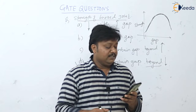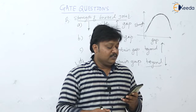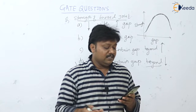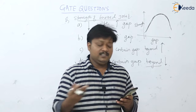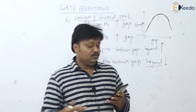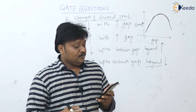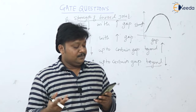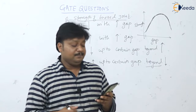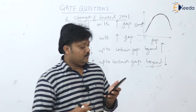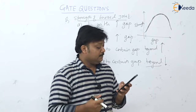Next question (repeated in 2011): which one of the following welding processes uses a non-consumable electrode? Again, TIG welding uses a non-consumable tungsten electrode — the correct answer.